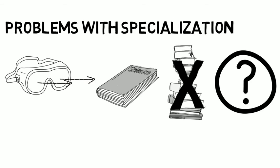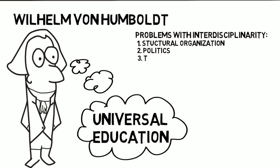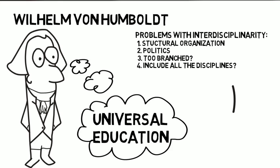Interdisciplinarity became an answer to the limitations of traditional disciplinary divisions. Counter to the current trend, a man by the name of Wilhelm von Humboldt created the concept of universal education in the 19th century, which parallels modern interdisciplinary programs. In doing so, he identified many of the same problems that confront interdisciplinary research today: one, the structural organization of universities; two, the politics of individual decisions; three, the question of whether connections can be made between individual disciplines; and four, the question of whether any one concept could be so general as to include all disciplines.